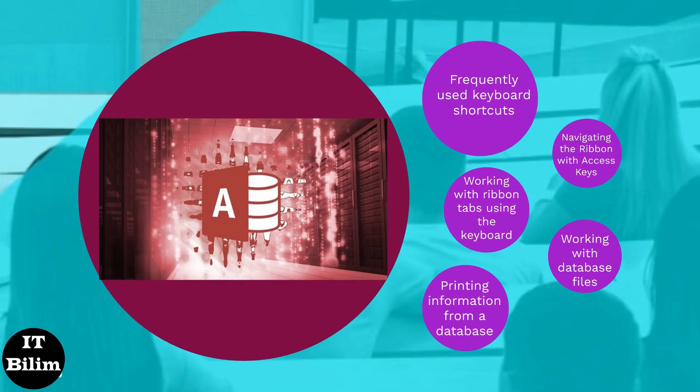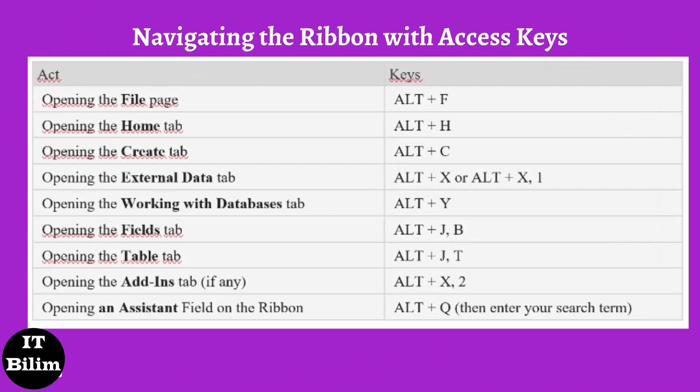Navigating the ribbon with Access keys. The ribbon is the tab strip at the top of Access. Its appearance depends on the selected tab; it consists of groups, each containing one or more commands. You can use only the keyboard to navigate the ribbon. Key tips are special keyboard shortcuts that allow you to quickly jump to a command on the ribbon with just a few keys, no matter where you are in Access. Every command in Access can be accessed with a key tip.